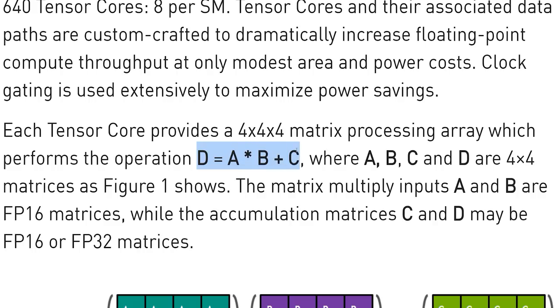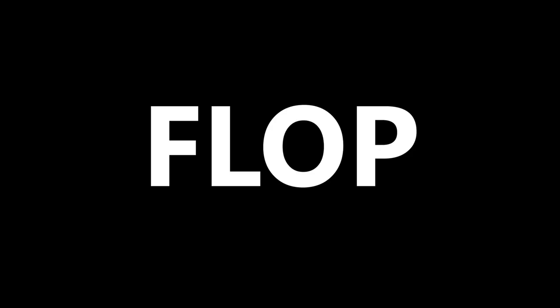NVIDIA has an excellent blog outlining the process. They specifically multiply and accumulate using the formula D equals A times B plus C, where all four letters represent 4x4 matrices. Recognize here where FP16 and FP32 are used. These just stem from the acronym FLOP, which stands for floating point operations per second, or per clock, and represents the number of multiplications and additions a GPU can handle in a given time span. This doesn't always translate to raw gaming performance.